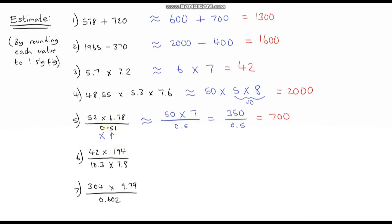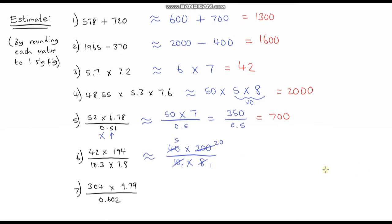The denominator is probably where a few of you may have slipped up — just remember that leading zeros are not significant. The next one: 42 rounds down to 40 and 194 rounds up to 200, divided by this which rounds down to 10, and 7.8 rounds up to 8. We can simplify: 200 divided by 10 is 20, and 40 divided by 8 is 5. Now we've just got 5 times 20, which is 100.